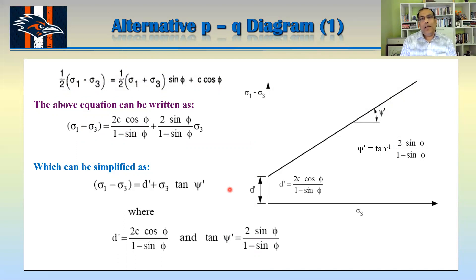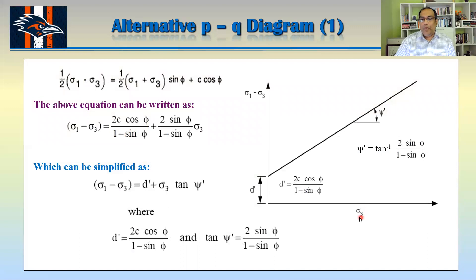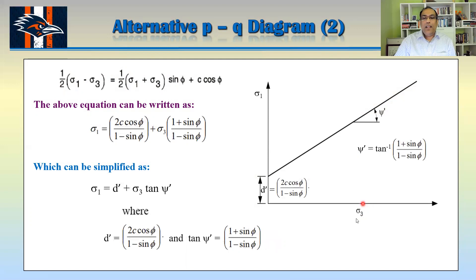So that gives you freedom to draw your failure surface in different settings. One is the p-q diagram — average stress versus half deviator stress. Another is sigma 3 versus deviator stress, which is confining stress versus deviator stress. And the third plots the two principal stresses sigma 3 versus sigma 1 directly.